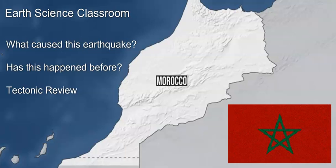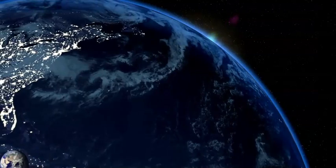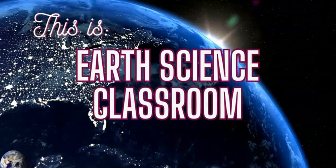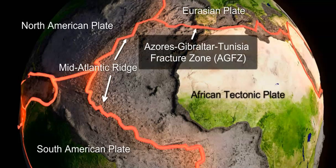This video is going to look at what caused the earthquake, the tectonics involved, and the details of the earthquake itself. This channel is dedicated to earth science processes, including tectonics, plate tectonics, and the movement of the crust. The engine of convection currents in the upper mantle causes lithospheric plates to move, resulting in volcanism and earthquakes or seismology. We had the most recent earthquake in Morocco in northern Africa along a certain fracture zone.